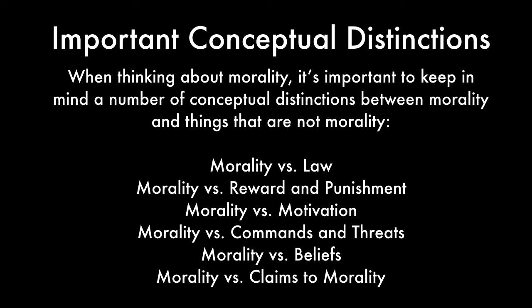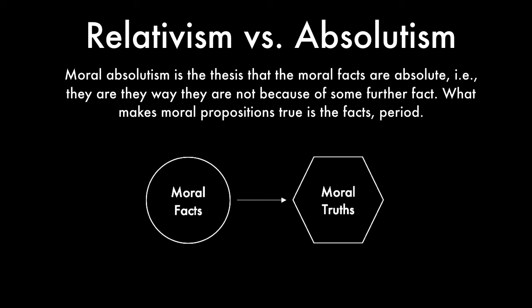Now let's talk about moral relativism. It's easy to understand by contrasting it with its opposite, moral absolutism. Moral absolutism is the thesis that the moral facts are absolute—the particular moral facts that exist are not explainable in terms of some further fact. What makes moral propositions true is just the facts, period. In the diagram, moral facts make moral truths true, with nothing further determining what the moral facts are.